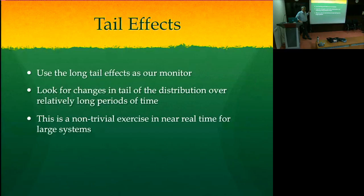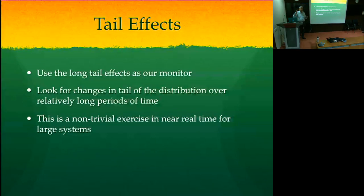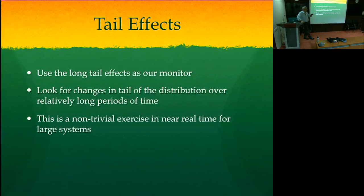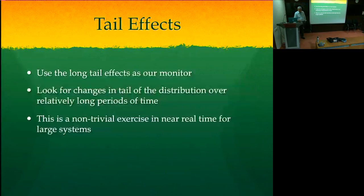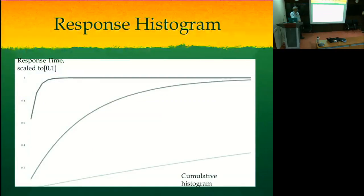Since tail effects are sensitive to both component failures and load variations, we can actually use them as a monitor. I look for changes in the tail of the distribution over relatively long periods of time — I'm not interested in running after every transient variation lasting less than a second. I want to focus on breakage that persists over time. This is a cumulative histogram: one curve shows the time taken by 95% of requests, another by 50%, another by 10%. Systems with different design and configuration parameters will show different shapes — you generally want to be operating in the well-behaved region.